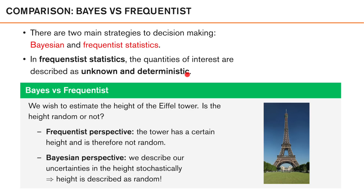Let us look at another example to highlight the difference between viewing the quantity of interest as unknown but deterministic compared to unknown and random. Let's say that we wish to estimate the height of the Eiffel Tower. Is the height random or not? In a frequentist perspective, the tower has a certain height and it's therefore not random — it has some fixed but unknown value. Using the Bayesian perspective, we describe our uncertainties in the height by viewing it as a random variable with a certain probability distribution. Describing the height as random becomes a useful tool to incorporate prior information that we have about the height of the Eiffel Tower before we make any observations.